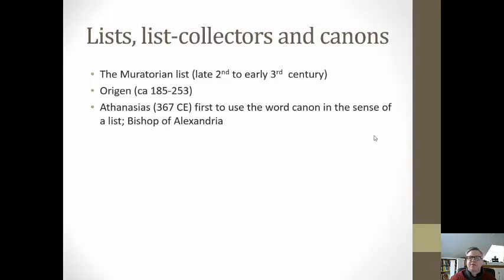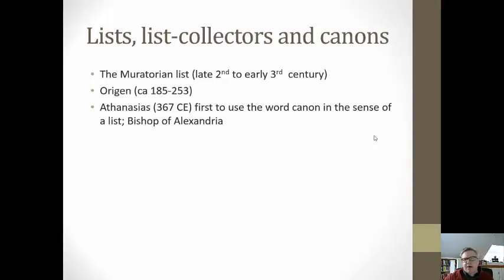Only Athanasius, in 367, is the first to use the word 'canon' in the sense of a list, and he is really the first to affirm the collection we have now — the 27 documents. By the mid to late 4th century, Athanasius starts to use the word canon in relationship to this collection of documents. So it took, from the time they were written, as much as 150 to 300 years until the early church recognized the canon of the New Testament.